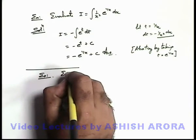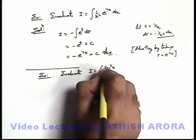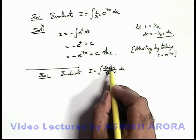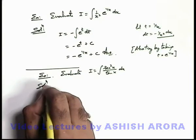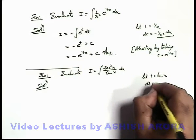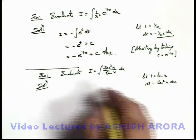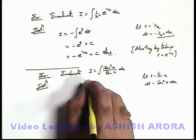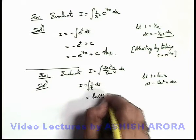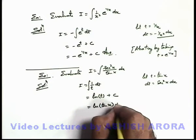We take one more example: evaluate I as integration of sec²(x) by tan(x) dx. Here I can see differentiation of tan(x) is sec²(x). Let t equal to tan(x), so dt equals sec²(x) dx. So sec²(x) dx can be written as dt. This I becomes integration of 1/t dt, which equals natural log of t plus c. So the result will be ln|tan(x)| plus c, which is the answer. Every time verify by differentiating the result to check whether you are getting the integrand.